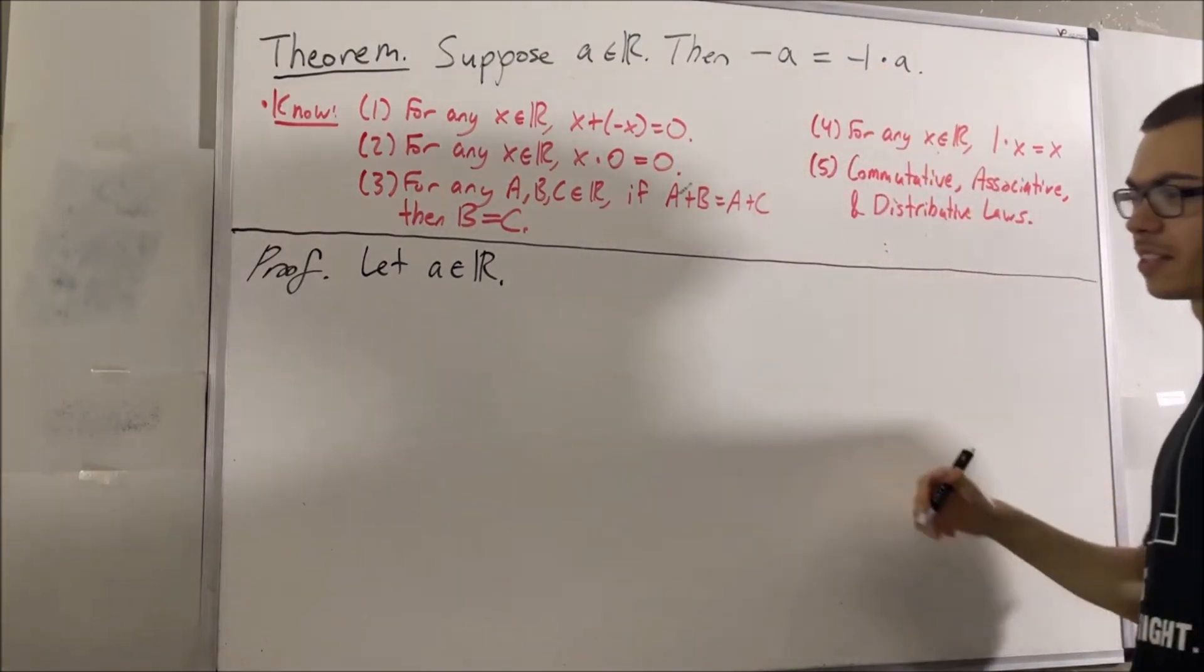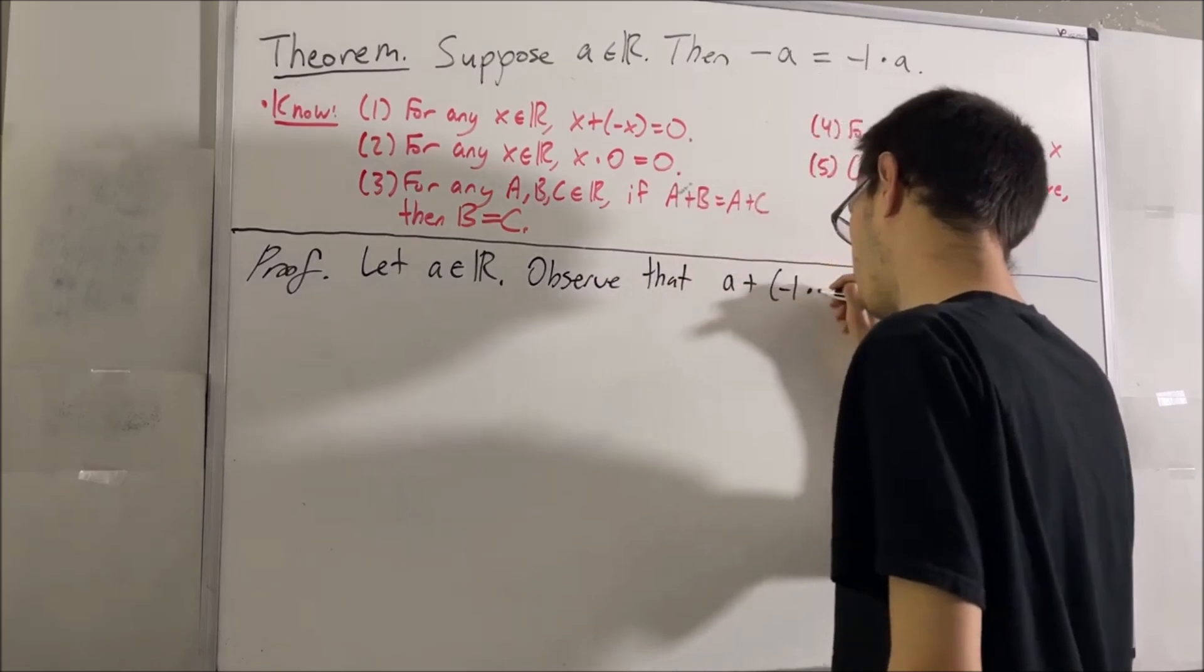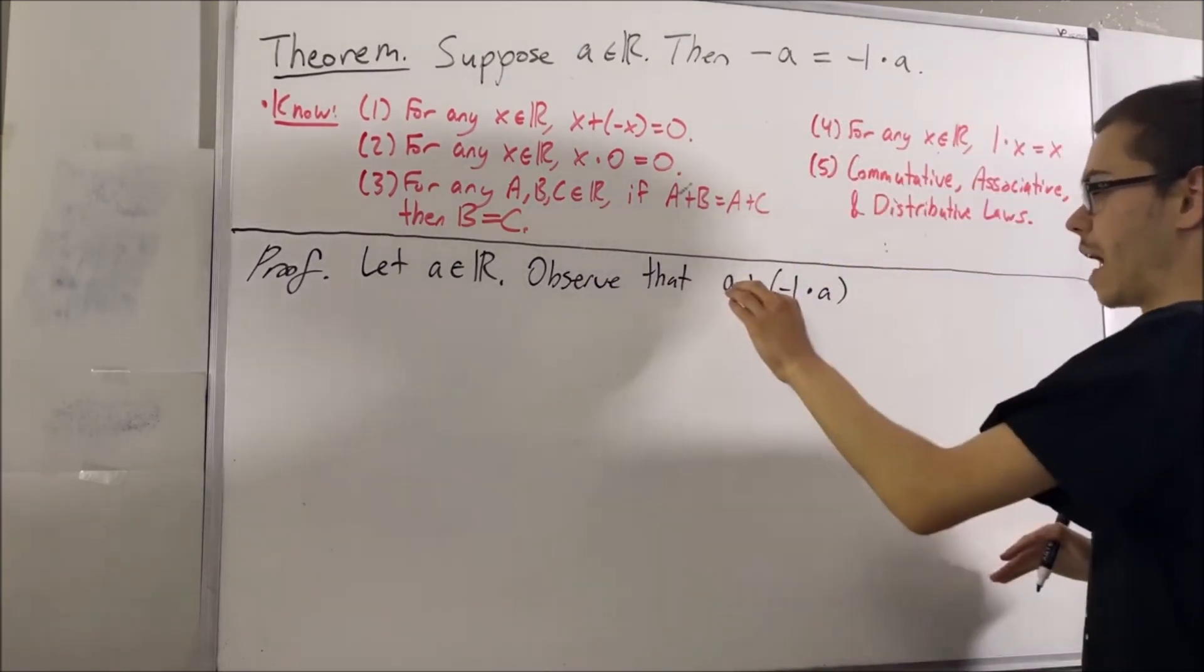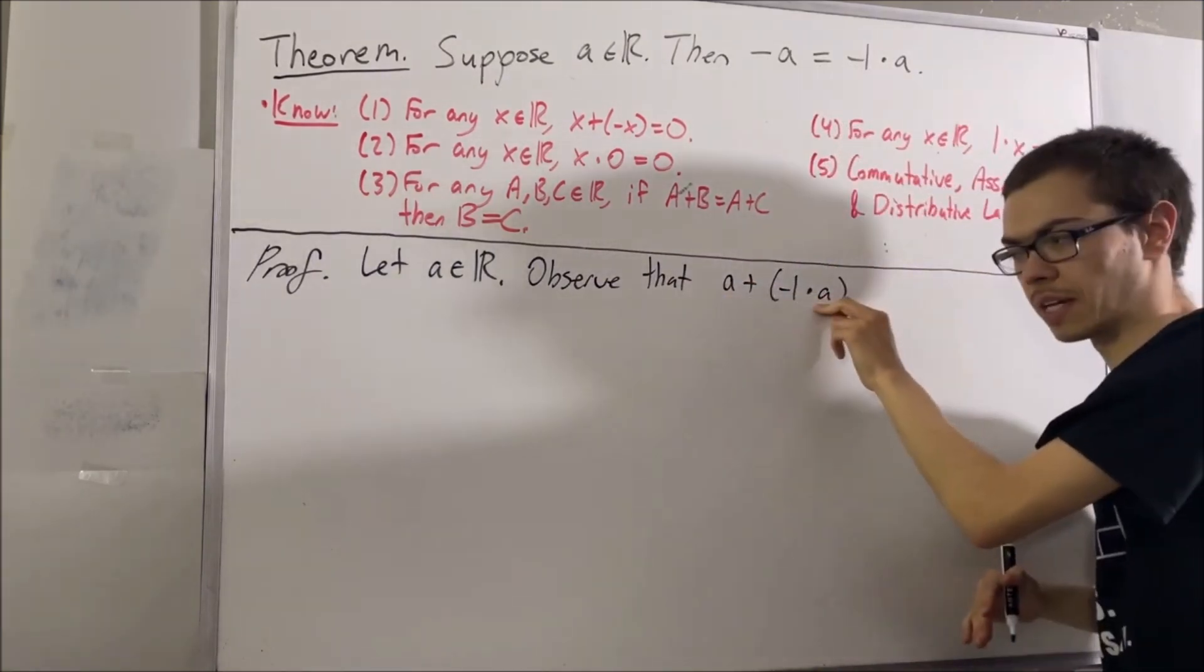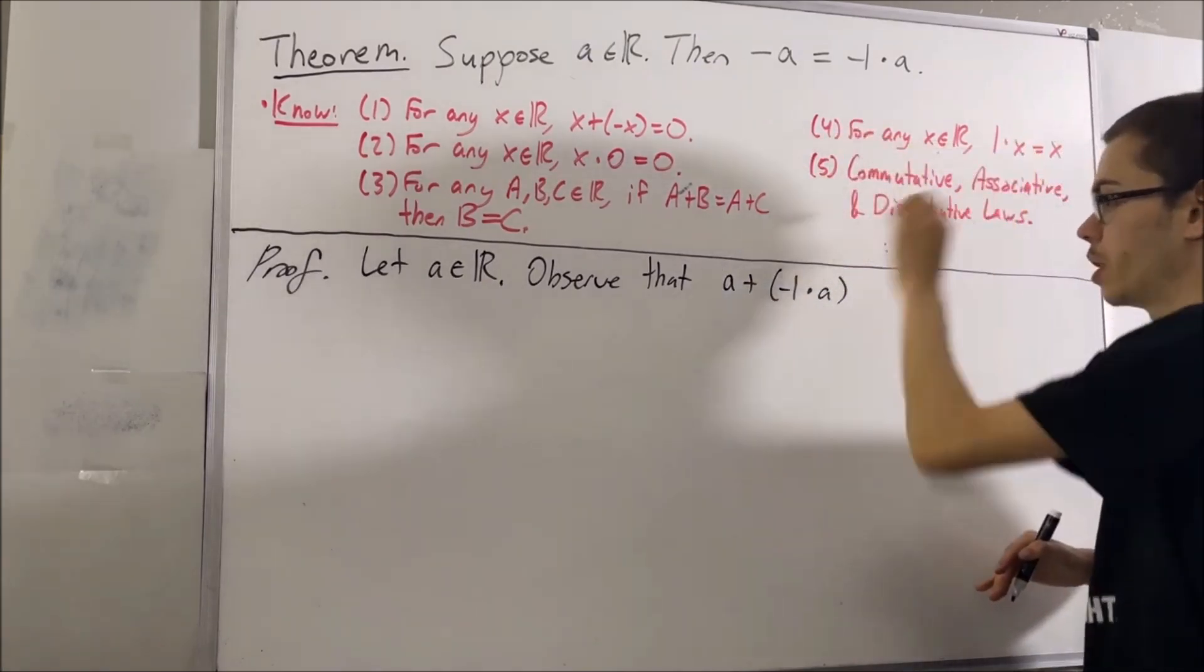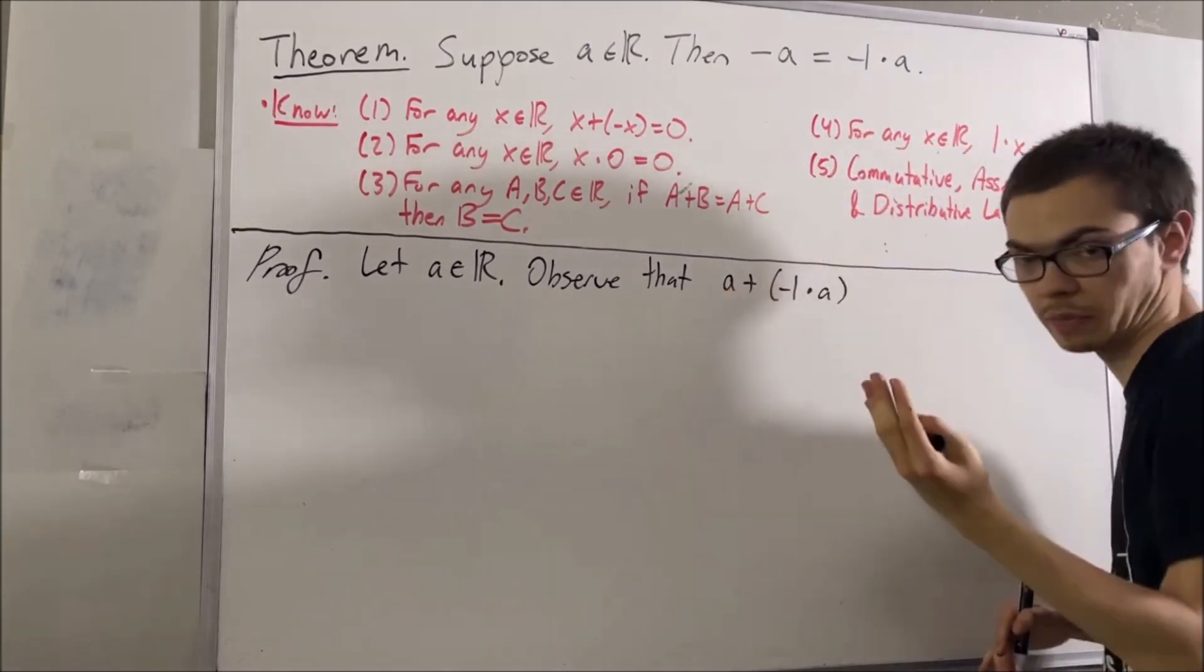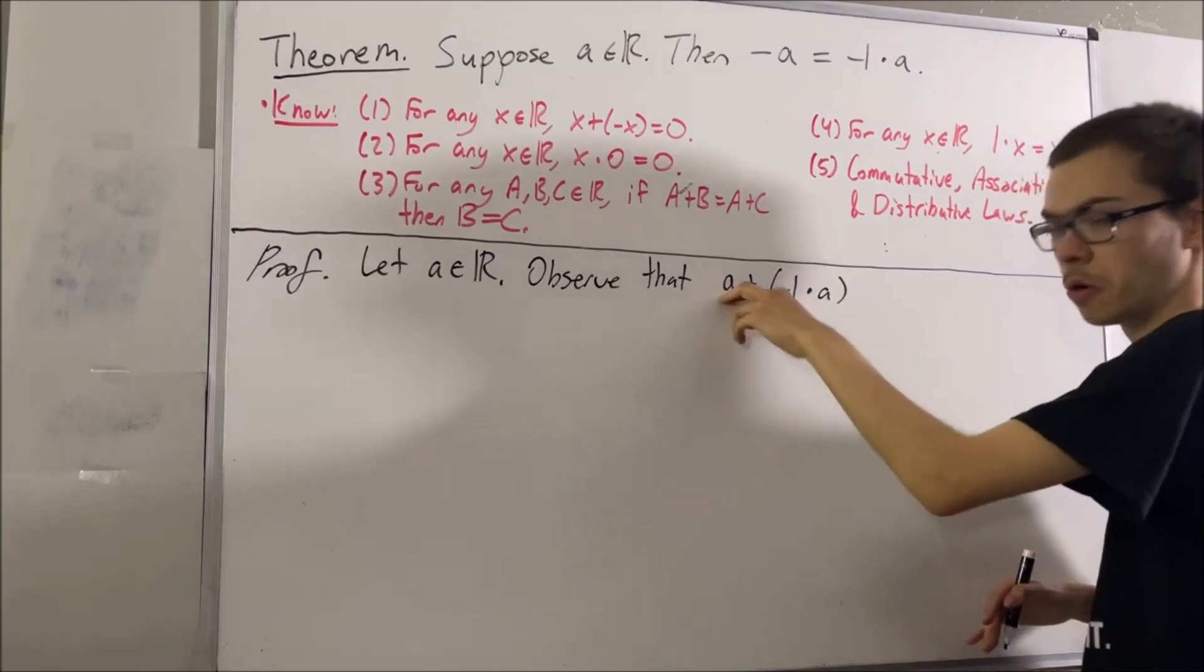And to do that, check this out. We are going to consider a plus negative 1 times a. Now, from fact number 4, we know that a is equal to 1 times a. So, we're going to replace a with 1 times a.